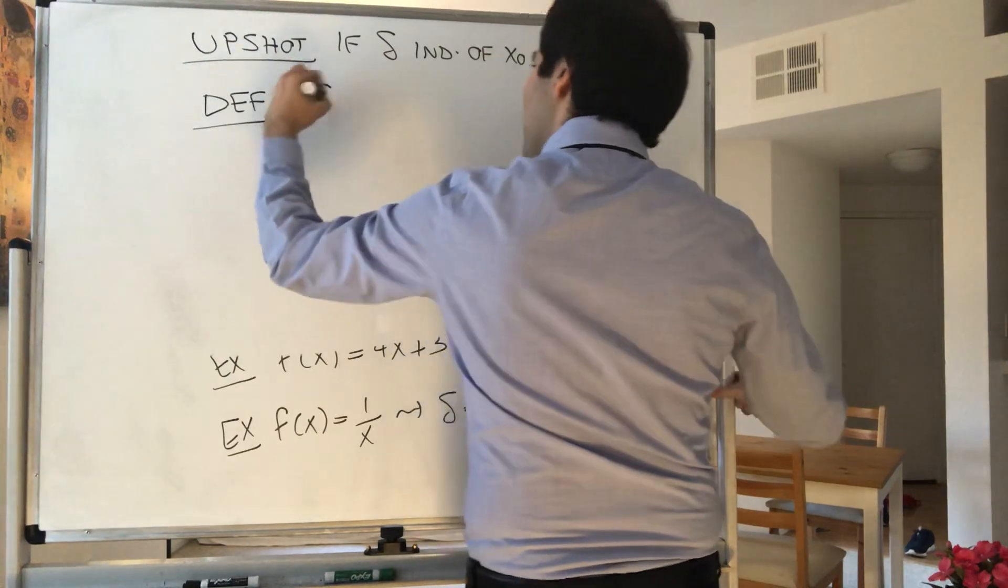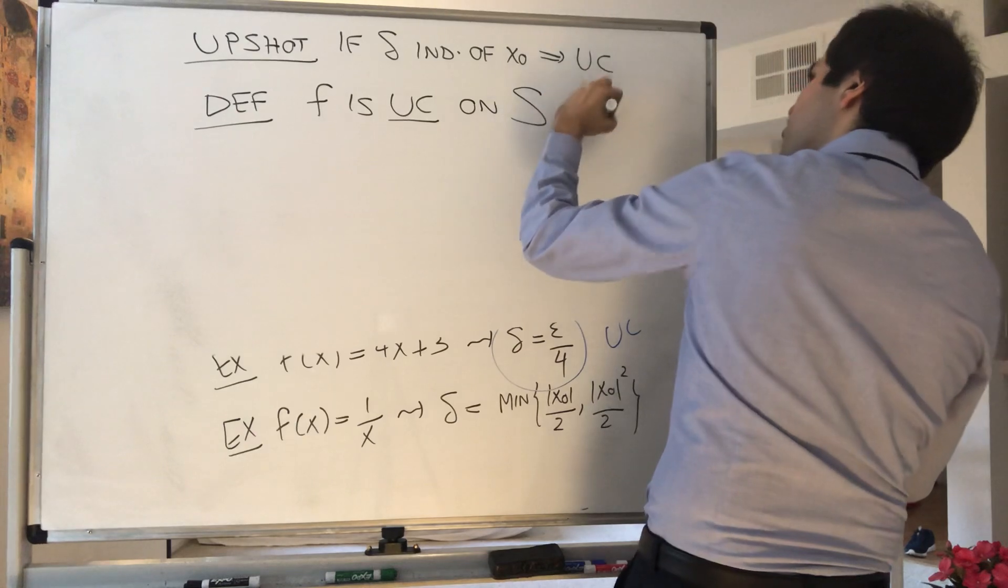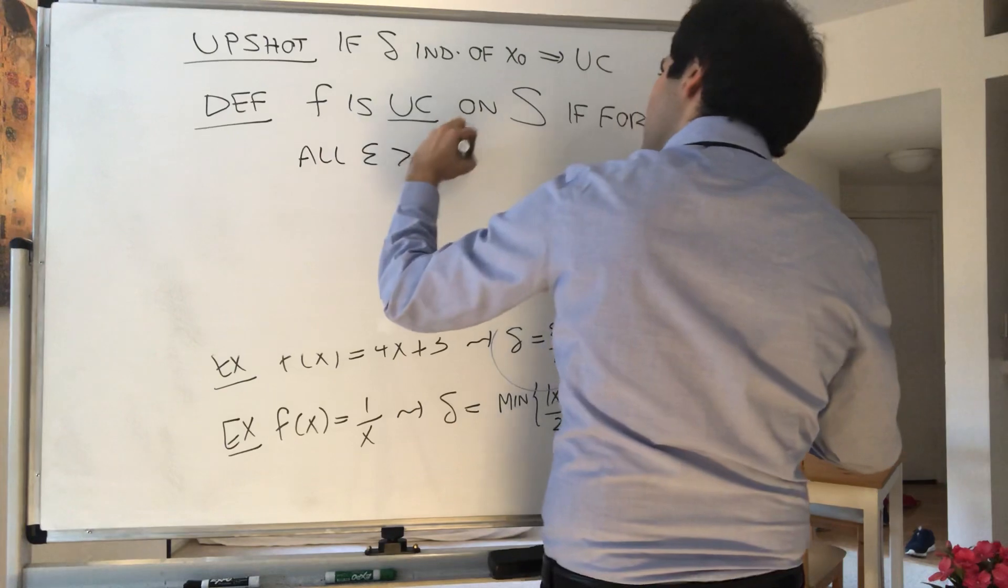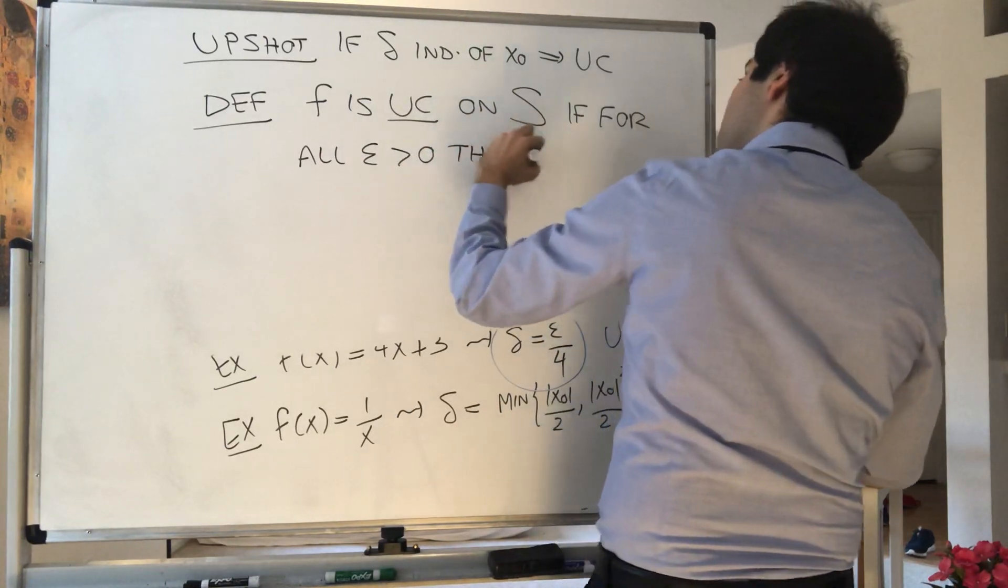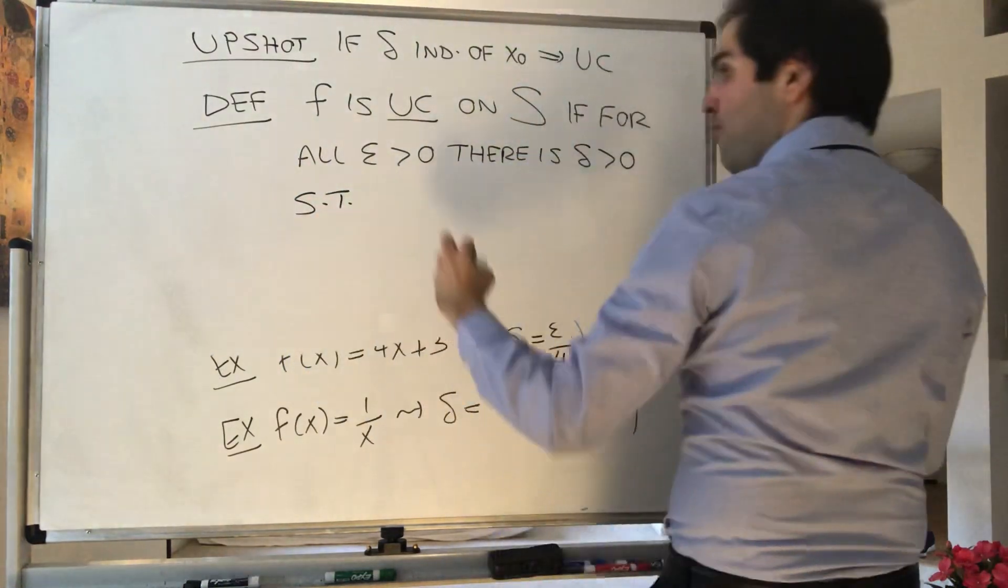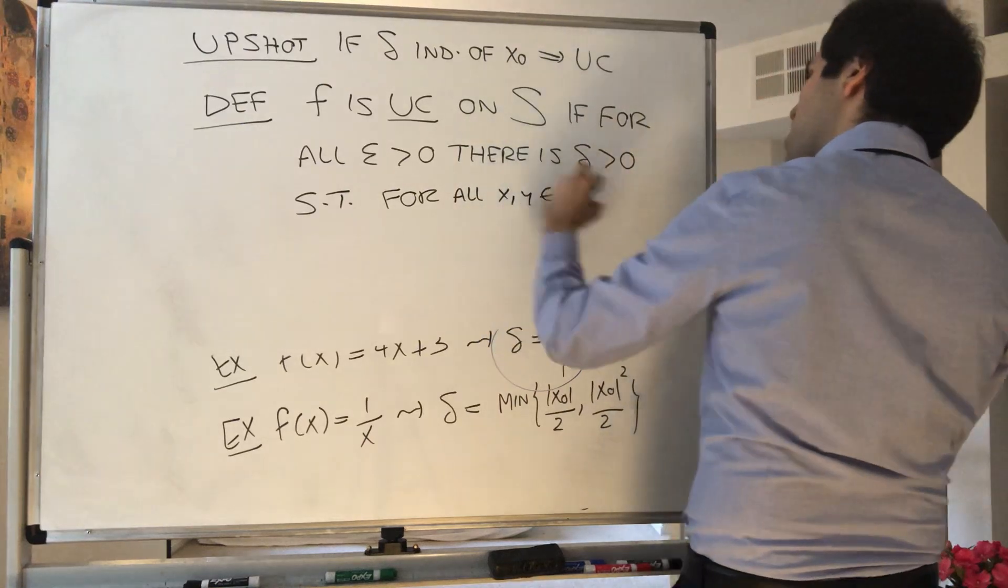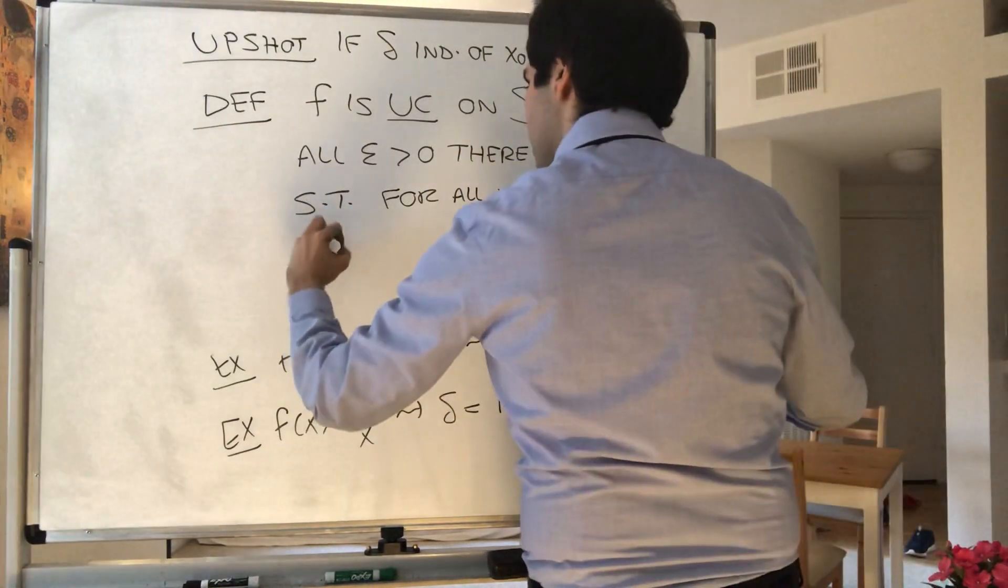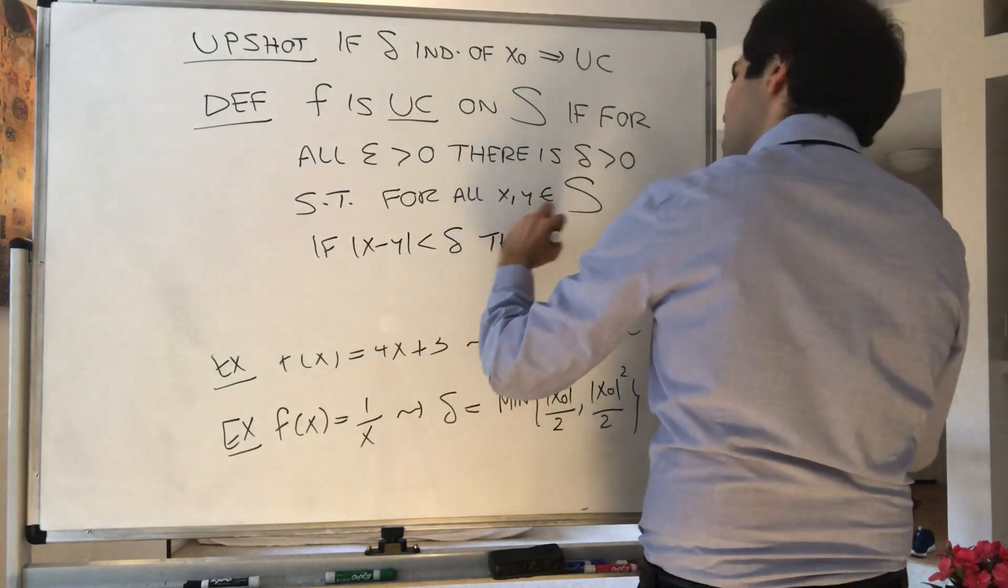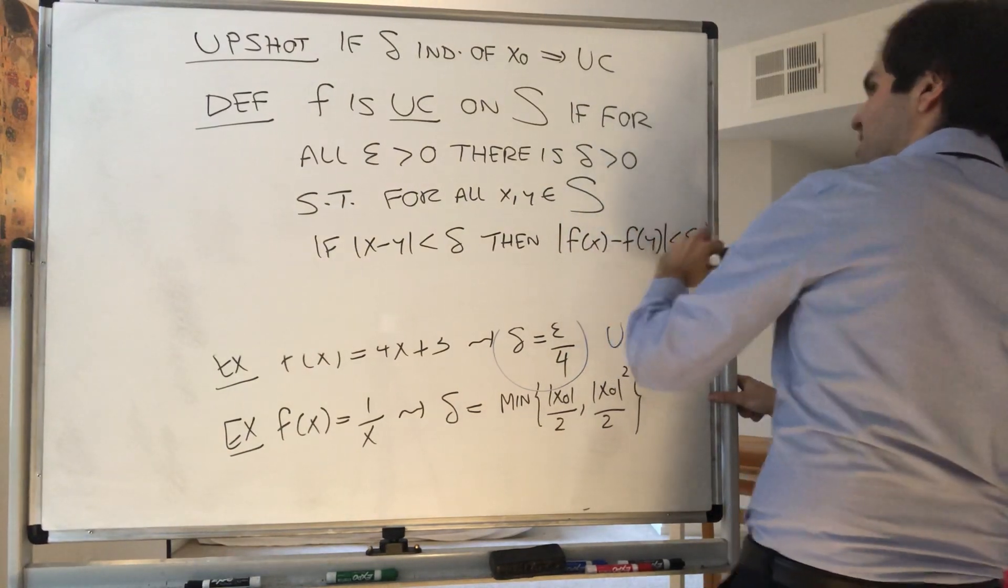So f is uniformly continuous on a set S if, for all epsilon, there is delta such that, for all x and y in your set, if x minus y is less than delta, then f of x minus f of y is less than epsilon.